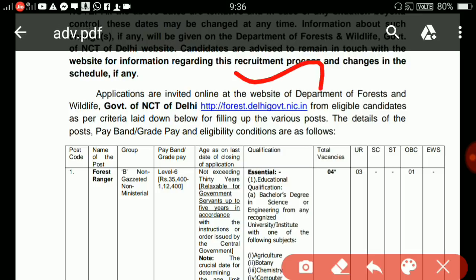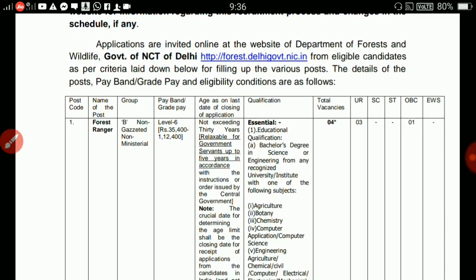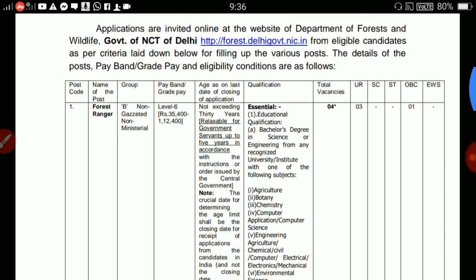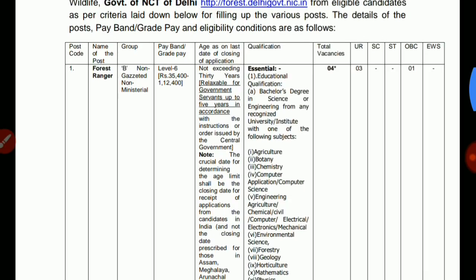The first requirement for Forest Ranger is a Bachelor's degree in Science or Engineering from any recognized university.